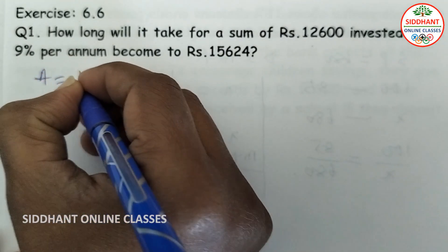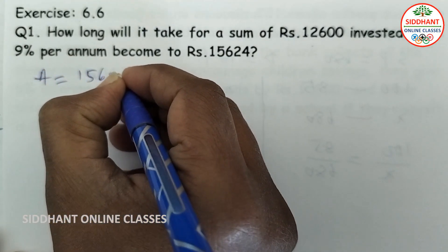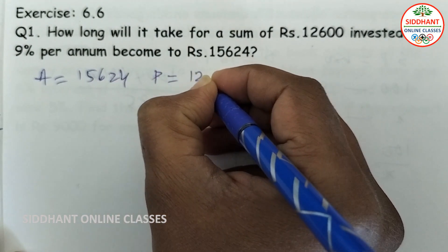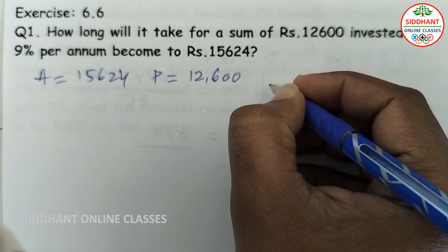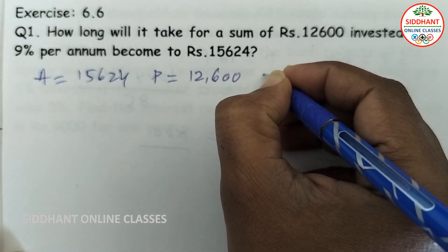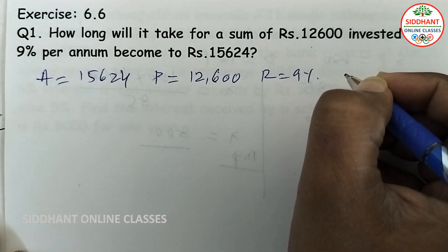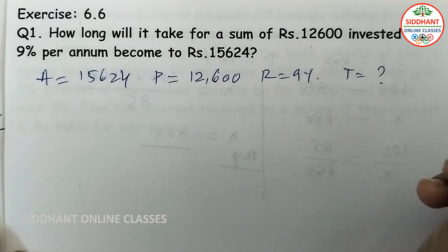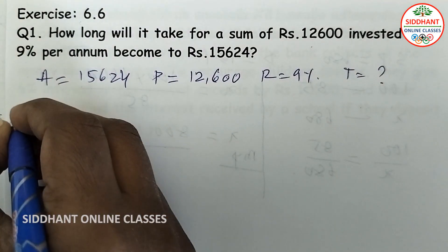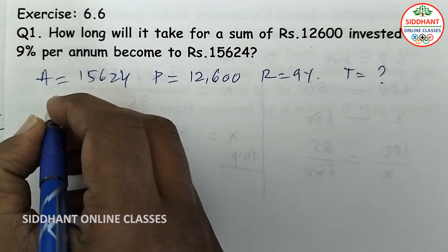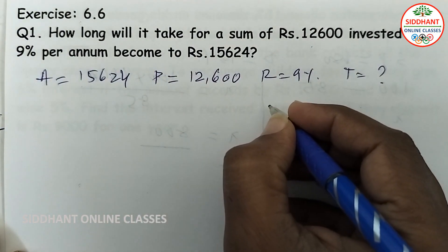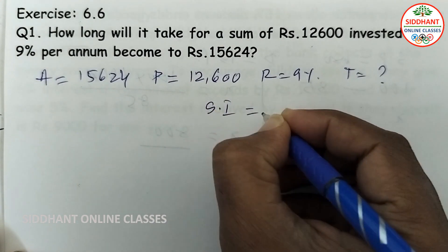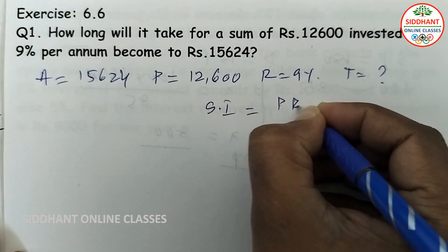So amount is given, that is 15,624. Principal is given, that is 12,600. The rate is given, that is 9%, and we are going to find out the time. First we are going to find out the simple interest. We know that simple interest equals PRT divided by 100.